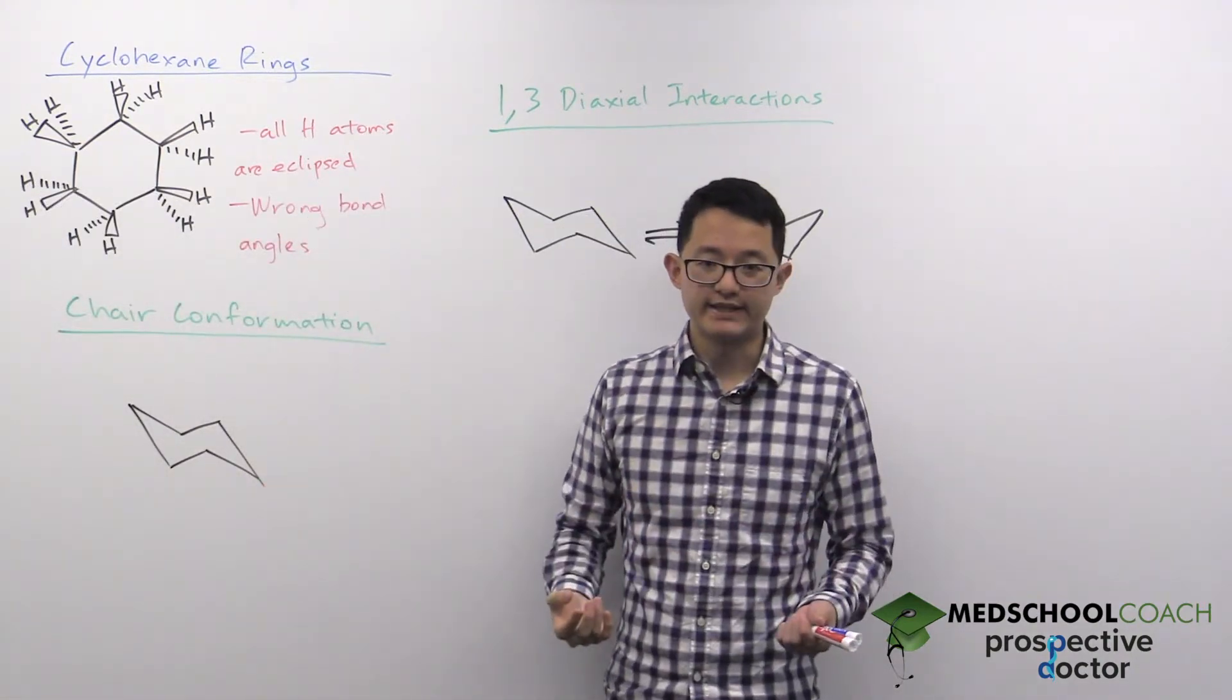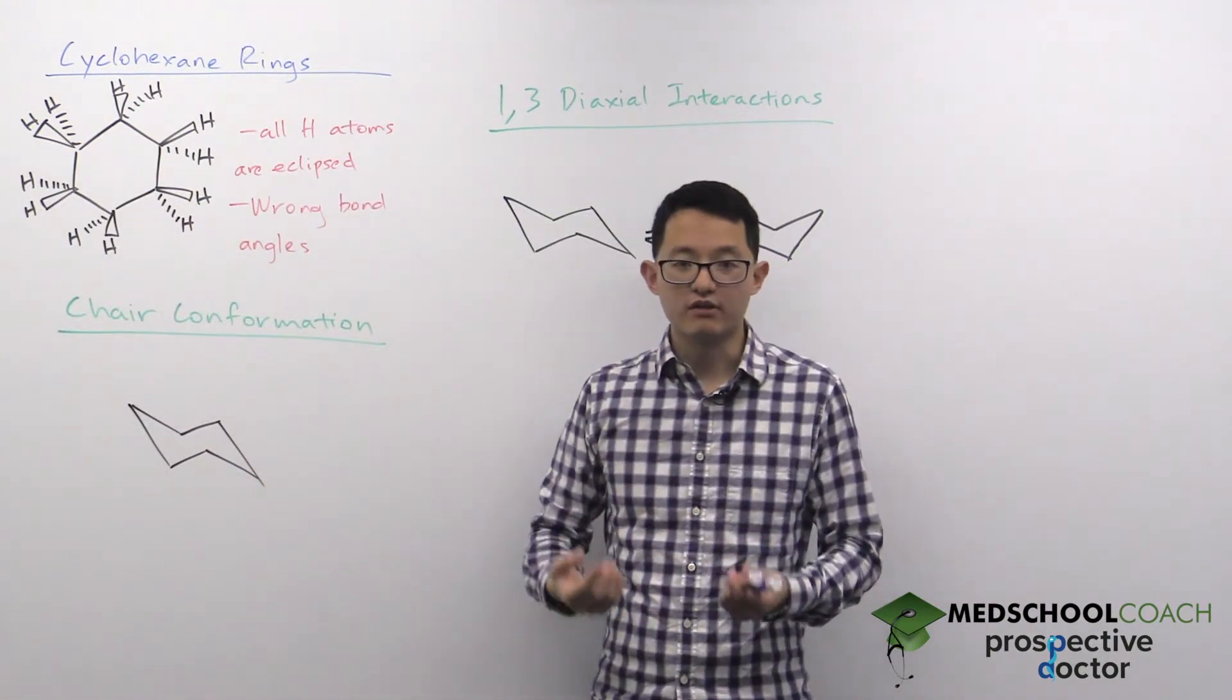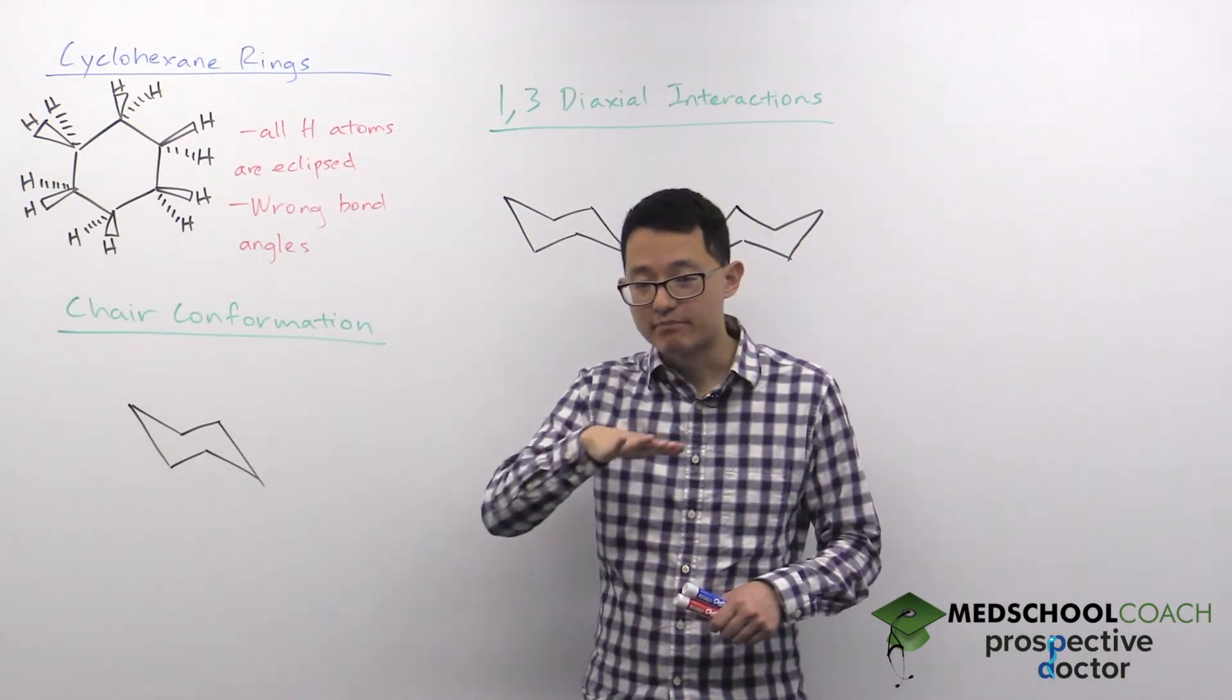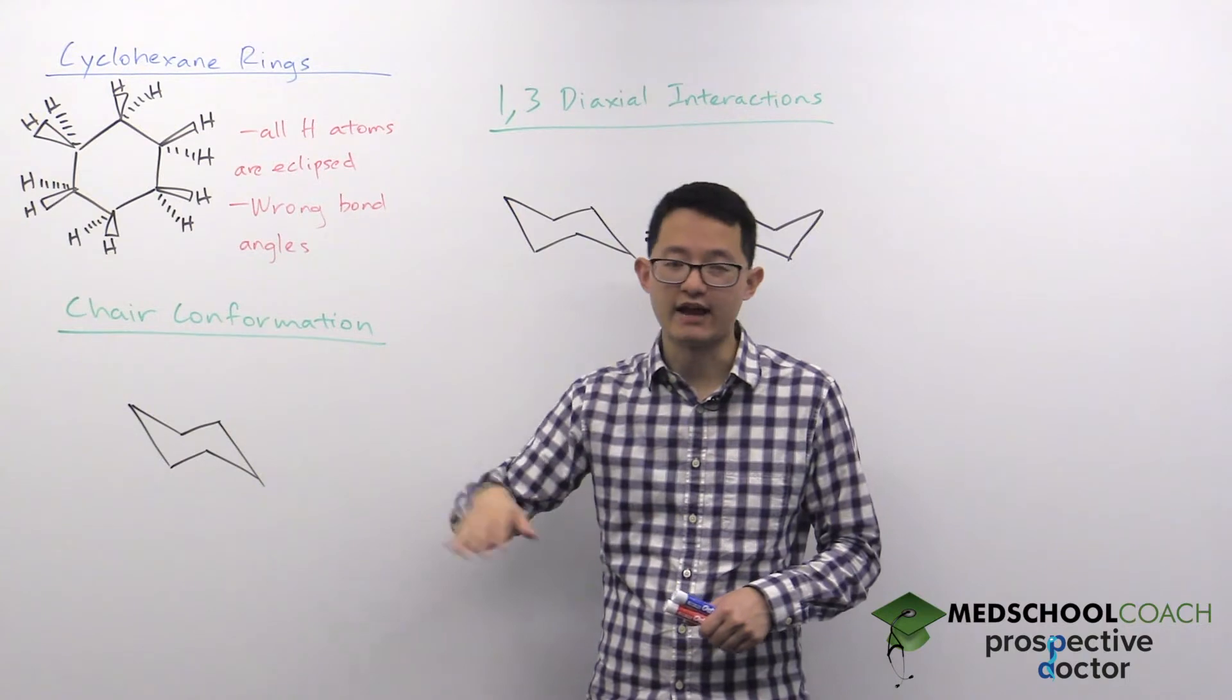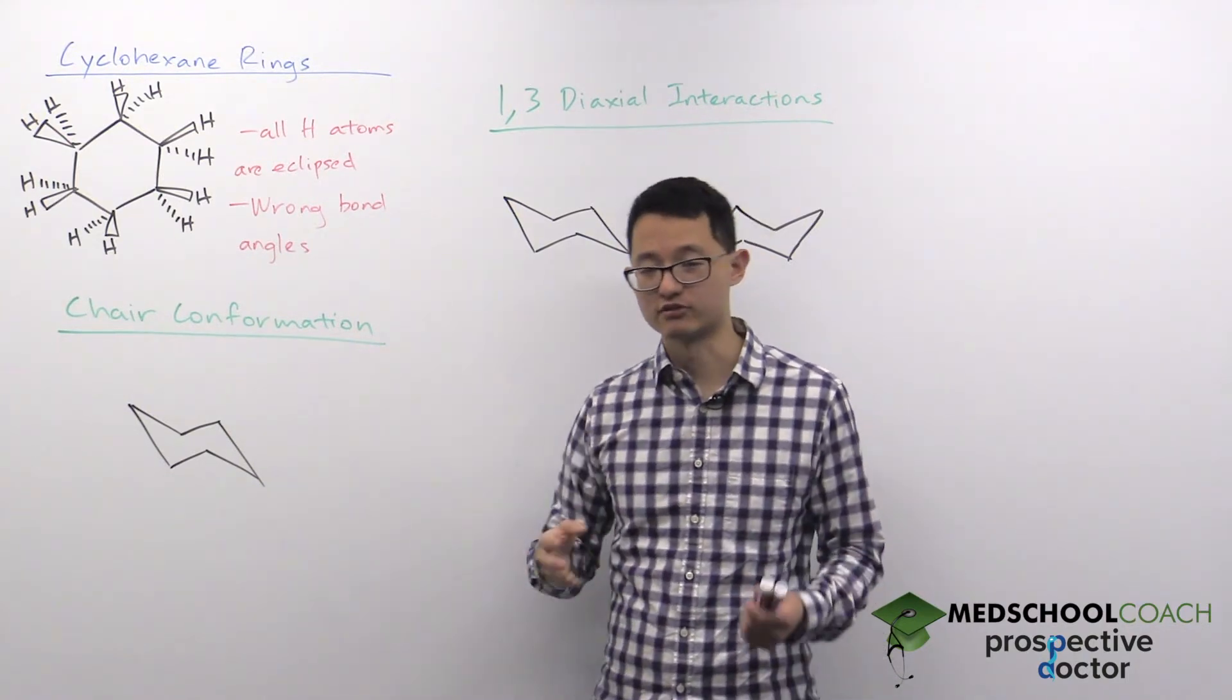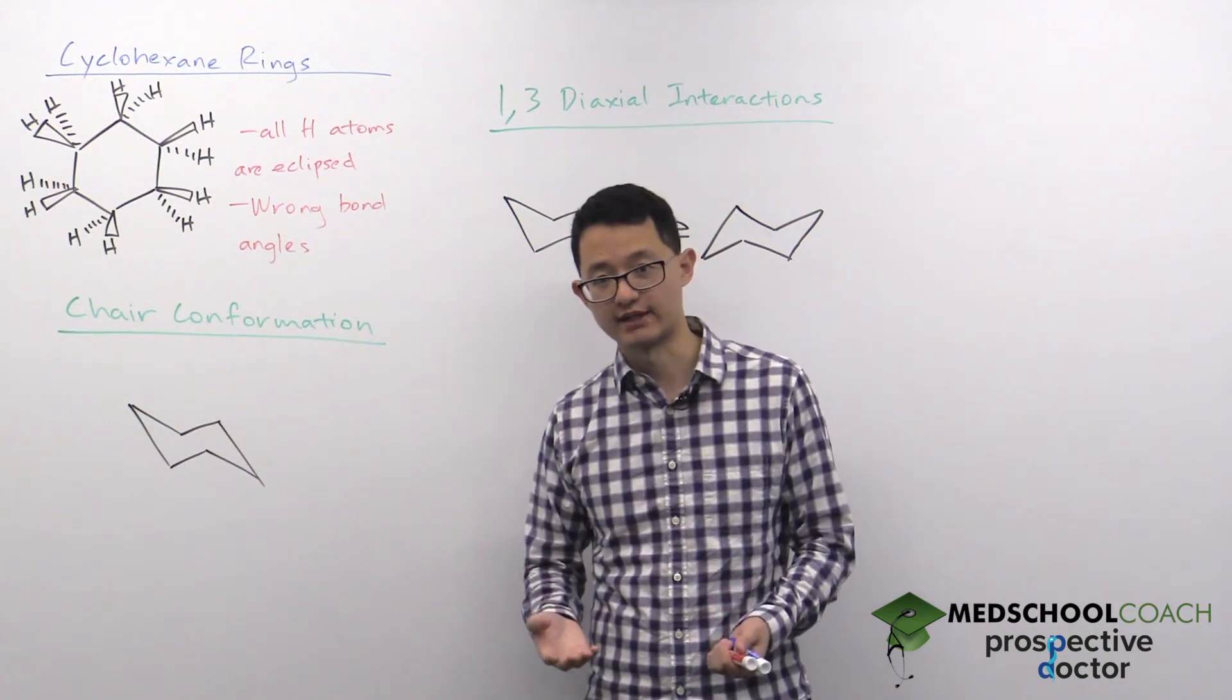This means that actual molecules with six-membered rings do not exist as a plane—it's not just a flat ring. What actually exists is the chair conformation, which you're likely familiar with from your organic chemistry classes.